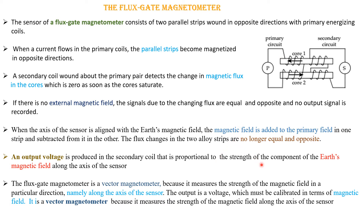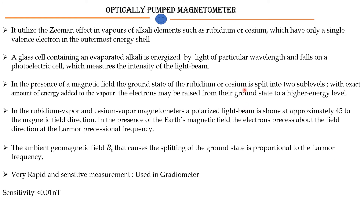The fluxgate magnetometer has a sensitivity of 0.1 to 1 nanotesla. The optically pumped magnetometer is more sophisticated — it uses the Zeeman effect in alkali vapor elements such as rubidium and cesium. Its measurement sensitivity is very high: less than 0.01 nanotesla. A glass cell contains evaporated alkali vapor energized by light of a particular wavelength, which falls on a photoelectric cell measuring intensity. In the presence of a magnetic field — as described by the Zeeman effect — atomic levels are split into sub-levels.